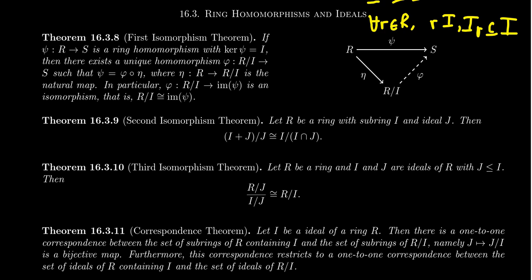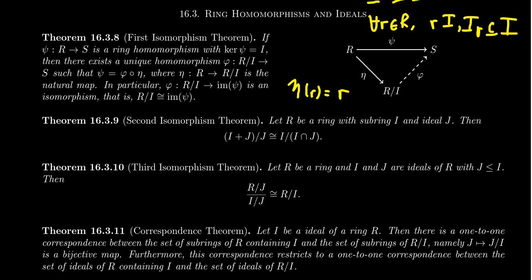Kernels and ideals are the same thing for ring theory, just like normal subgroups and kernels are the same thing in group theory. So if we have this ring homomorphism psi from R to S, and the kernel of psi equals I, then there exists a unique homomorphism — we'll call it phi — going from the quotient ring R mod I to the ring S. Psi is then the composition of two homomorphisms: phi, and then eta, where eta is the natural quotient map that goes from R to R mod I.